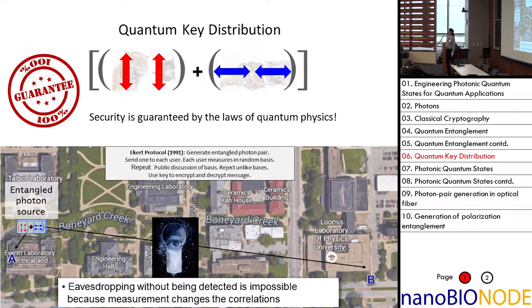If someone is eavesdropping, that will change the measurements, and you'll be able to detect it because by measuring it, they collapse the states. That's the idea behind this quantum key distribution. The great thing about this is now security is guaranteed by the laws of quantum physics.